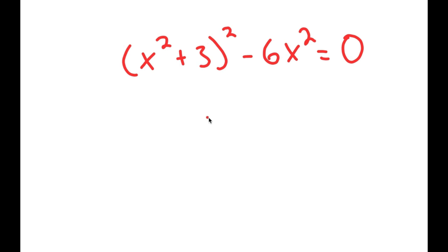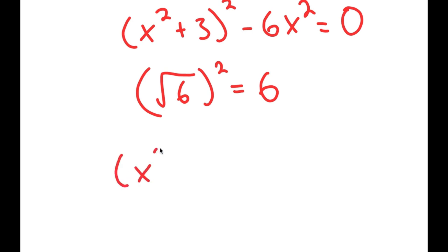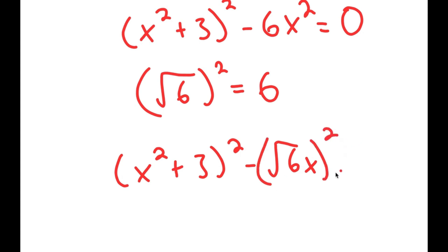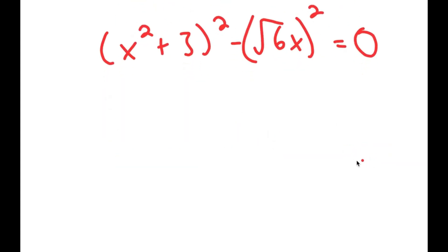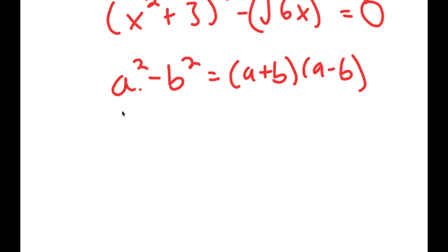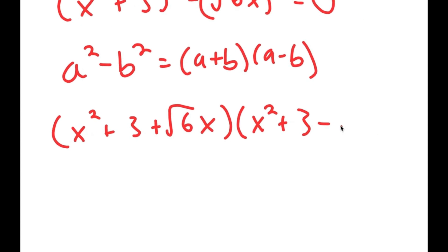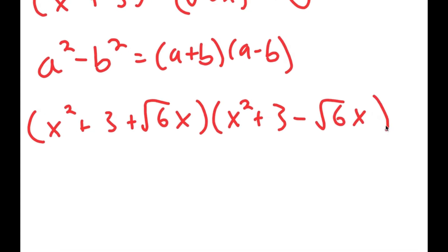Remember that the square root of 6 squared is equal to 6. So I'm going to rewrite this as x squared plus 3 squared minus the square root of 6 times x, all squared, equal to 0. The reason I did that is because now I can use the difference of squares property: a squared minus b squared equals a plus b times a minus b. This gives x squared plus 3 plus square root of 6 times x, multiplied by x squared plus 3 minus square root of 6 times x, equals 0.